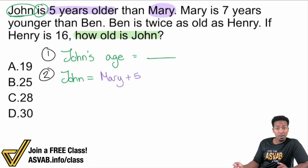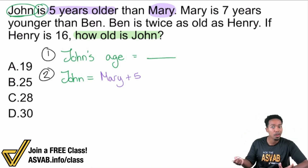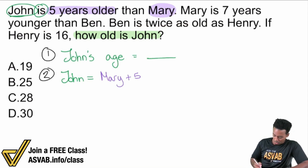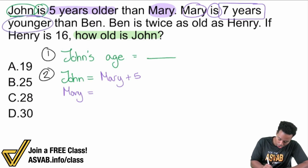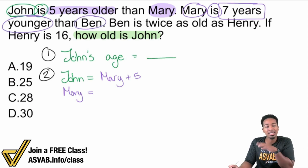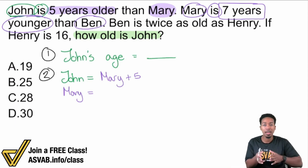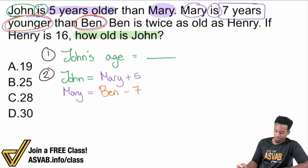John is connected to Mary, but do I know Mary's age? No — I've got to keep going, because if I can get Mary's age, I can use that to get John. So what information do we know about Mary? This is kind of like a little scavenger hunt. Mary is seven years younger than Ben. So using that same line of thinking: Mary equals Ben minus seven. Whatever Ben's age is, we subtract seven to get Mary.